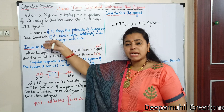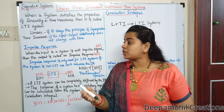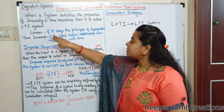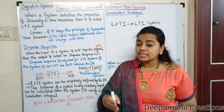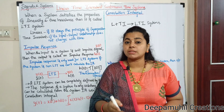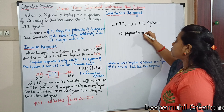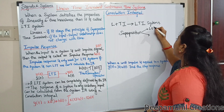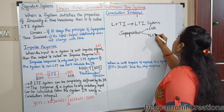In the Linear System and Time-Invariant System, we have already completed the first unit. A system is Linear if it obeys the principle of Superposition. A system that obeys the Superposition principle is a Linear System. We have two laws: the Law of Additivity and the Law of Homogeneity.